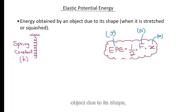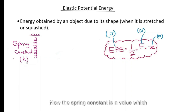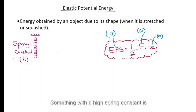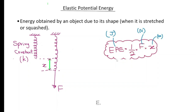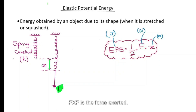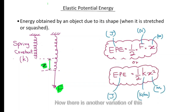Elastic potential energy is the energy obtained by an object due to its shape when it is stretched or squashed. A spring has a spring constant k, which indicates how hard or easy it is to stretch. When a force is applied, the spring extends by an amount called the extension, denoted x. The elastic potential energy can be found using EPE = ½fx, where f is the force exerted.